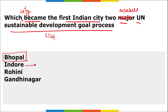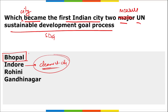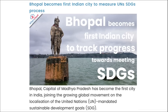Also mark that Indore is the cleanest city. Bhopal became the first Indian city to measure UN Sustainable Development Goal processes.